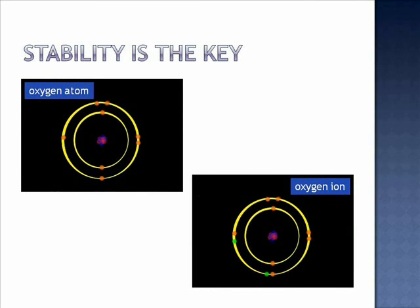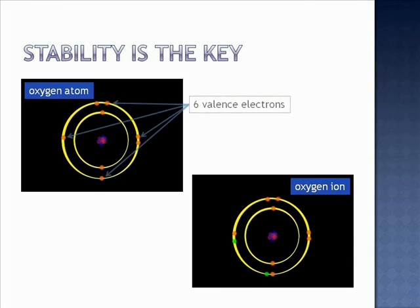Stability is the key. Here we have Bohr diagrams of an oxygen atom and an oxygen ion. In the diagram of the oxygen atom, we can see that there are six electrons on the second energy level. Therefore, we say that an oxygen atom has six valence electrons.